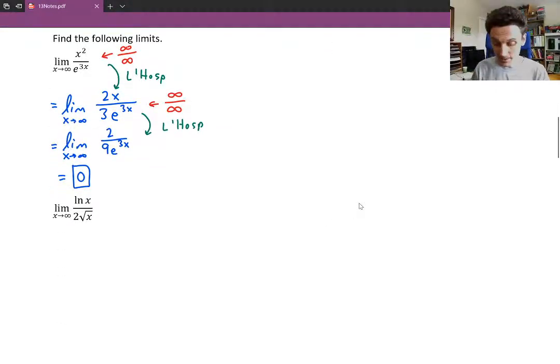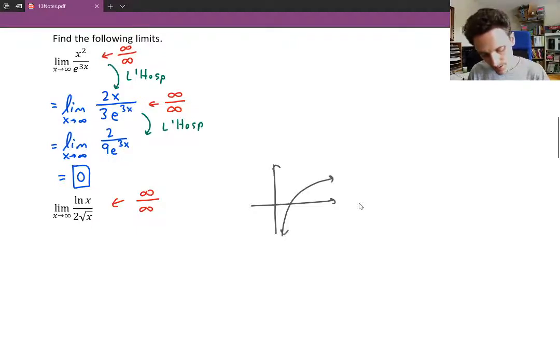The next example says look at the limit as x approaches infinity of ln x over 2 square root of x. Once again the top and the bottom are approaching infinity. If you think about the graph of ln x as x approaches infinity, ln x grows to infinity. There isn't any kind of cap on what ln x could be. It grows. It grows very, very, very slowly but it still grows to infinity.